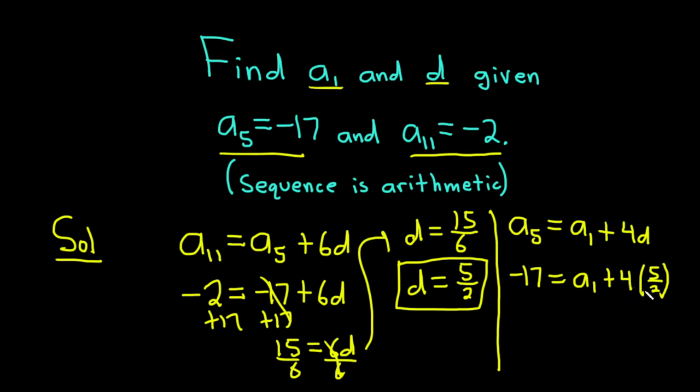We can do some simplification here. 2 goes into 4 twice. Then 2 times 5 is 10. So let's rewrite our equation: -17 equals a₁, then 2 times 5 is 10, so plus 10. Now we can subtract 10 from both sides. So minus 10, minus 10. We'll finally end up with a₁ equals -27. So that would be the first term in this particular example, a₁.